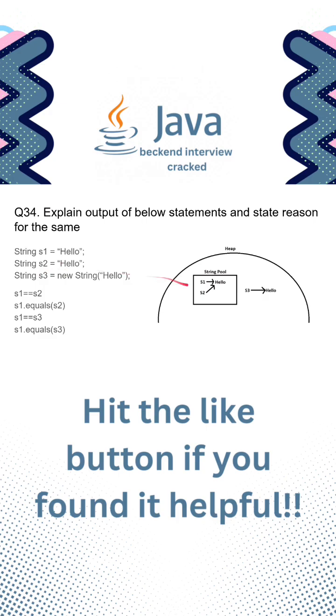s2 is also hello, and since hello already exists in the string pool, it is not creating a new string for it - s2 is also pointing to hello. Now s3 is created using the new keyword, that's why it is not present in the string pool; instead, it is present as an object in the heap.